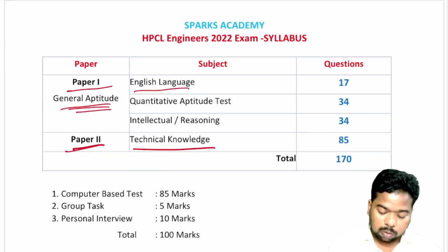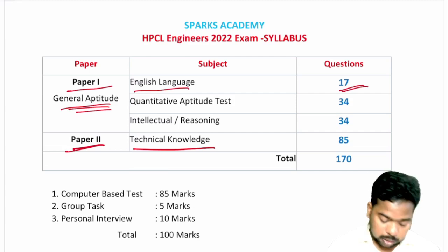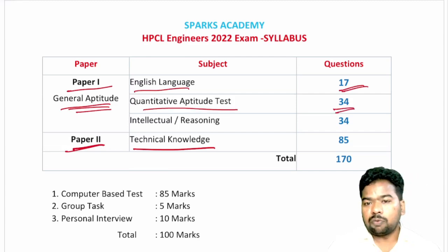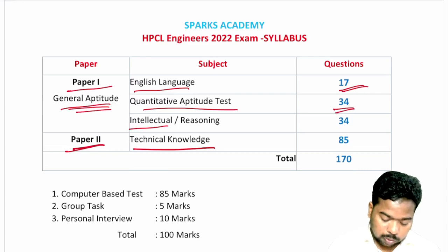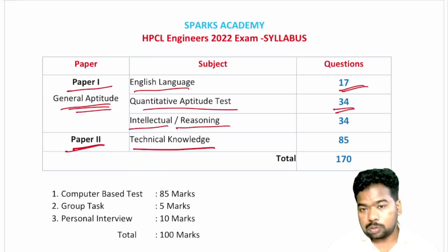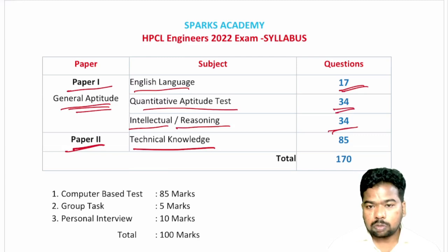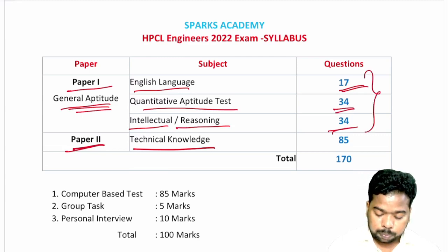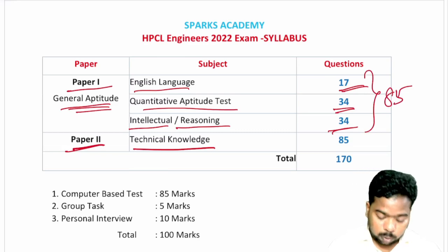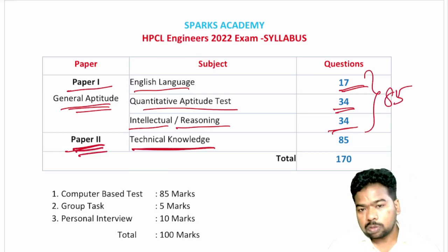Paper 1 covers English language and technical aptitude — approximately 15 questions for English and 14 questions for aptitude. There is also a section on quantitative aptitude.